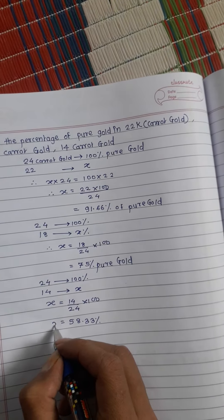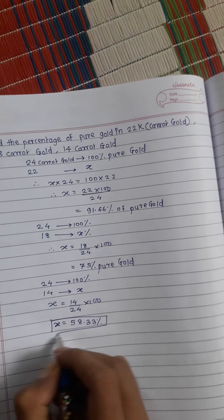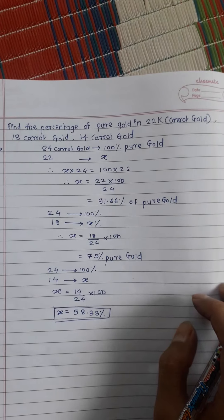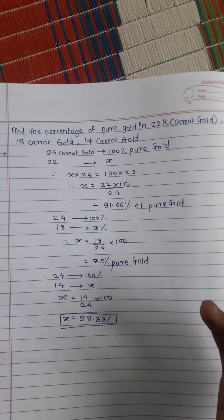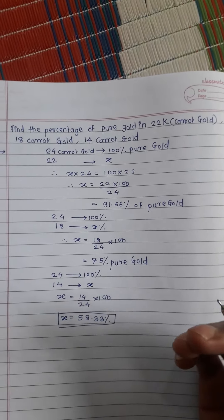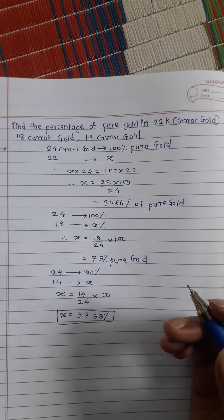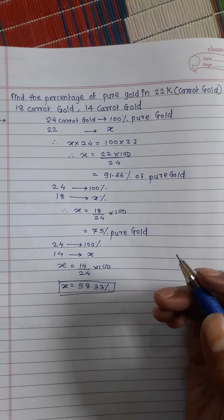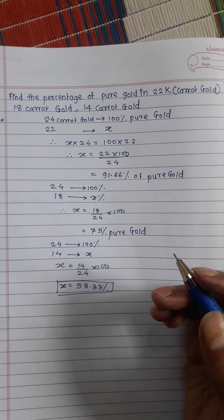So in this way we can calculate how much percentage of pure gold is there in 22 carat, 18 carat, 14 carats. Thank you friends, hope you like this video. Please like and subscribe my channel. Thank you and have a nice day.